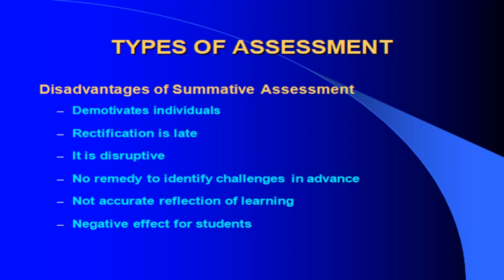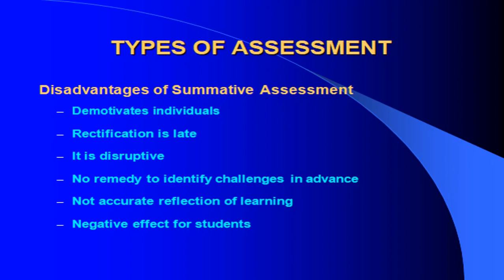Disadvantages of summative assessment include: students may be demotivated because when there is competition, one student scores more and another scores less — that creates a demotivation factor. Rectification is late — if someone has an issue, the correction comes late. It can also be disruptive, with no remedy to identify challenges in advance. It may not be an accurate reflection of learning, and students can cheat. Without proper check and balance, teacher bias in giving marks is possible. There is also a negative effect on students as it can be a demotivating factor.